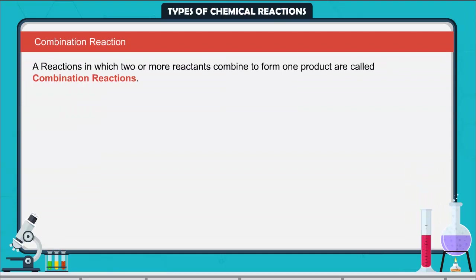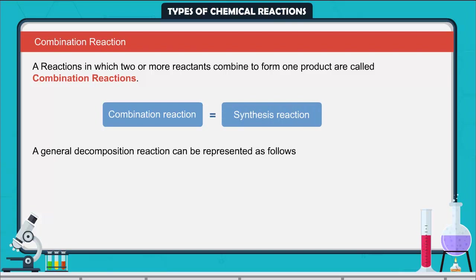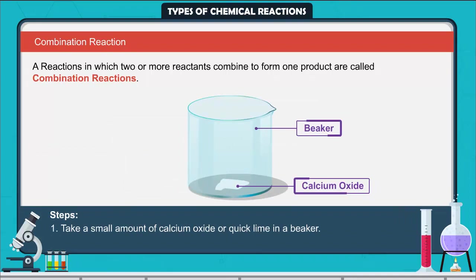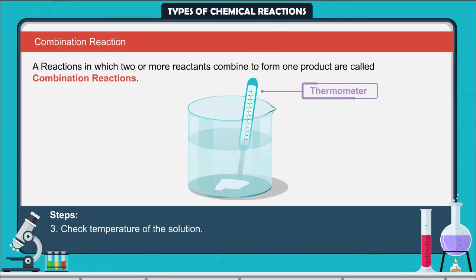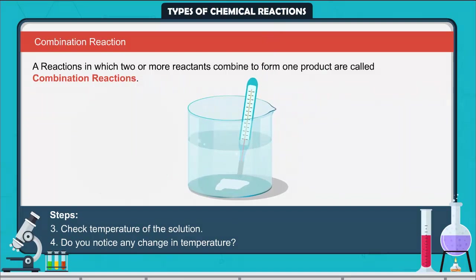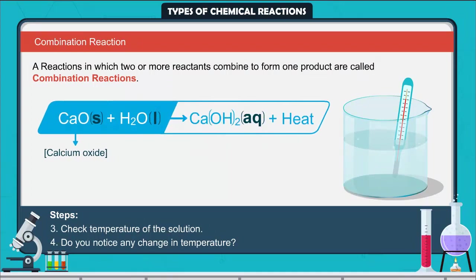Reactions in which two or more reactants combine to form one product are called combination reactions. Combination reaction is also known as a synthesis reaction. The general combination reaction can be represented as: A + B → AB. For example, take a small amount of calcium oxide or quick lime in a beaker, slowly add water, and check the temperature. Calcium oxide reacts vigorously with water to produce slaked lime or calcium hydroxide, releasing a large amount of heat.